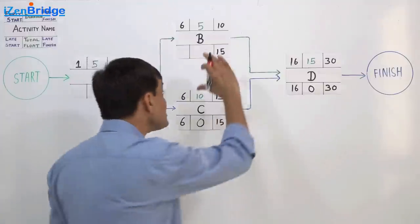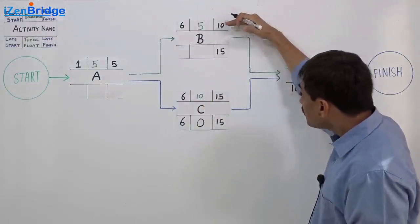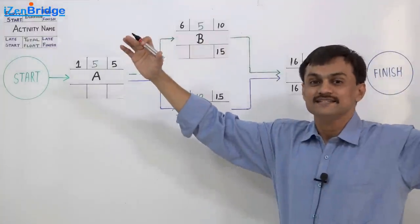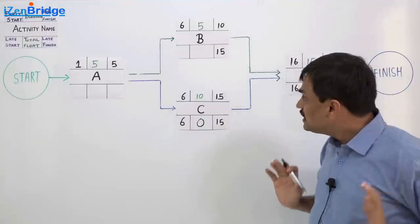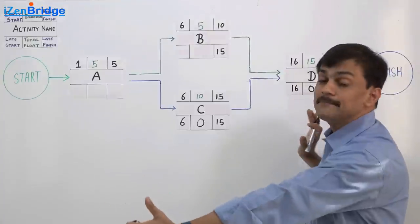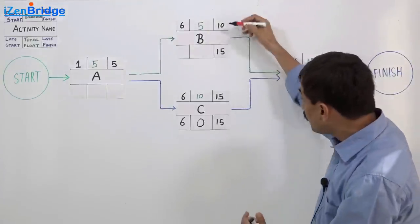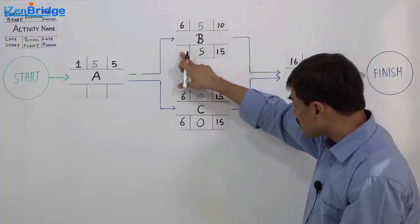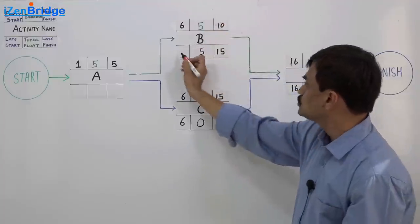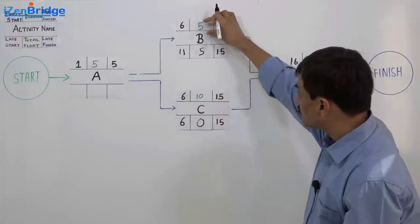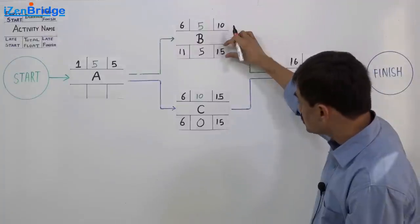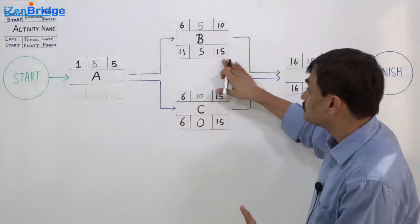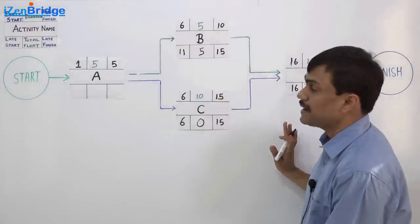For activity B, the early finish is day 10 but the late finish is day 15 — giving a flexibility of 5 days. So the total float for B is 15 minus 10 equals 5 days. The late start for B is 15 minus 5 plus 1 equals day 11. Activity B can start as late as day 11 and finish as late as day 15 with no impact on the project.